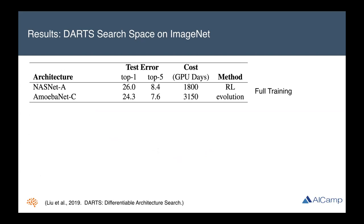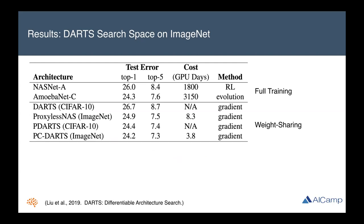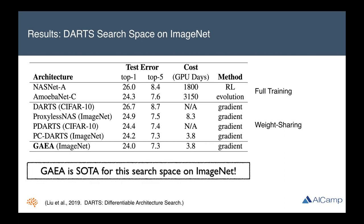Next we looked at the DARTS search space on ImageNet. Previously, first-generation NAS methods like AmoebaNet were leading the pack on ImageNet. Since then, weight sharing has improved performance dramatically with much more tractable computational cost. With our geometry-aware approach, we're able to further improve upon the state of the art for this search space on ImageNet. The really amazing thing is that while first-generation NAS methods like AmoebaNet required over 3,000 GPU days, GAIA required just four GPU days to find a similarly performant architecture.